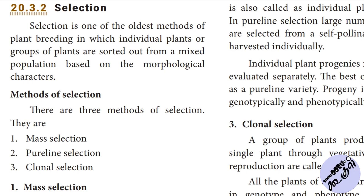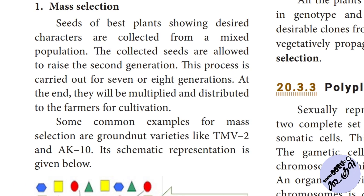First, there is mass selection. Seeds from the best plants showing desired characters are collected from the mixed population. The seeds from different plants with desired characters are collected together.